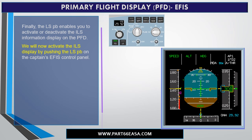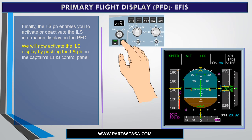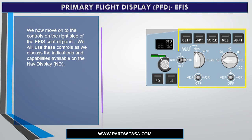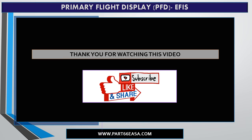Finally, the LS push button enables you to activate or deactivate the ILS information display on the PFD. You will now activate the ILS display by pushing the LS push button on the captain's EFIS control panel. With the LS push button on, the items displayed on the PFD include glide slope, localizer, localizer inbound course, localizer identifier and frequency, and DME if it's available. We now move on to the controls on the right side of the EFIS control panel, which we will use as we discuss the indications and capabilities available on the nav display.